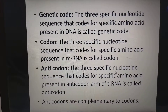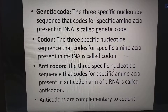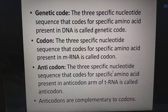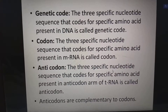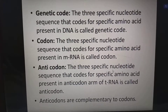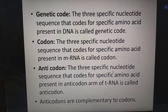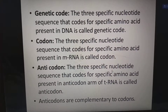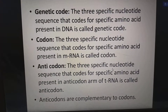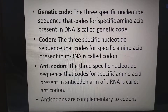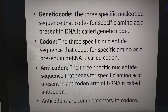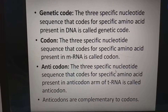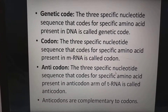Genetic code is the three specific nucleotide sequence that codes for a specific amino acid present in DNA, also called triplets. Codon is the three specific nucleotide sequence that codes for a specific amino acid present in the mRNA. So genetic code is present in DNA, codon is present in mRNA. Anticodon is the three specific nucleotide sequence present in the anticodon arm of tRNA, which is complementary to the codon.